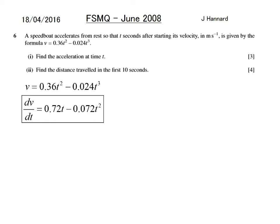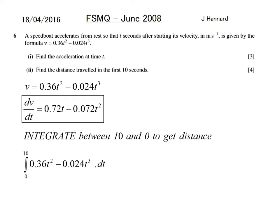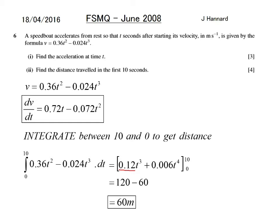Second part: find the distance travelled in the first 10 seconds. Integrate the velocity function between limits 0 and 10, since integration of velocity gives displacement. Adding 1 to the power and dividing by the new power: integral gives 0.12t cubed minus 0.006t to the 4. Putting in 10 gives 120 minus 60, which equals 60 metres. Seven more marks if you know general motion — this is M2 level, very advanced.